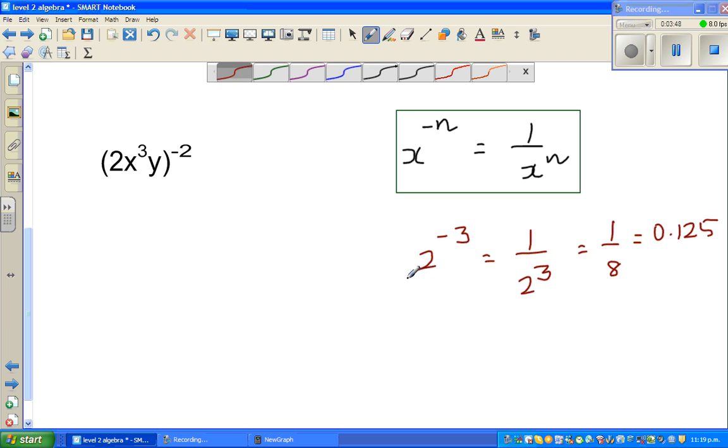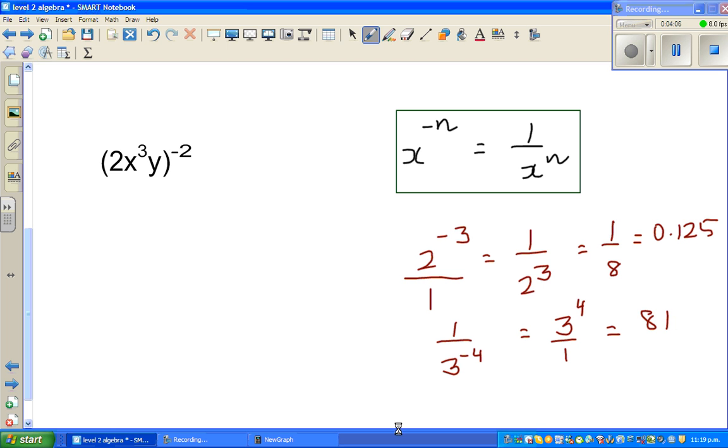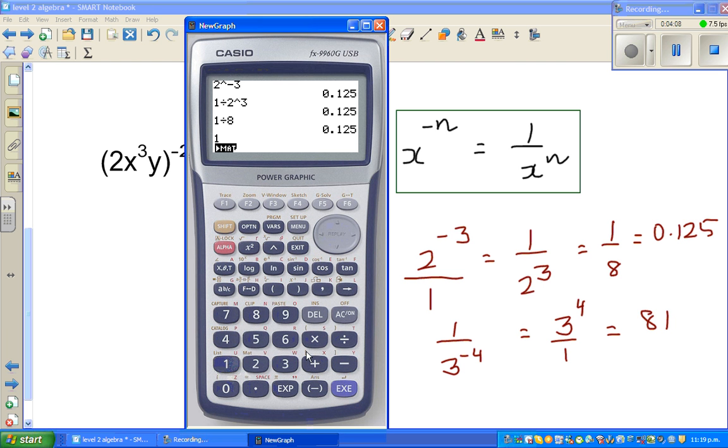That means here this is sitting in the numerator. Now suppose if the question was like this 1 over 3 raise to minus 4 means that is same as 3 to the power of 4 over 1 and 3 to the power of 4 is 81. So let me show you that 1 divided by 3 raise to negative 4 is 81. That's how.